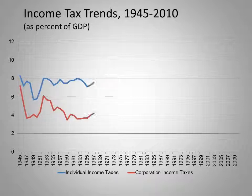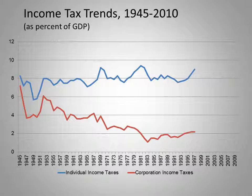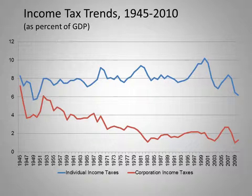Since 1945, individual income taxes — the blue line — as a share of the economy have hovered around 8% and are now near their historic low of just under 6%. And corporate income taxes, the red line, have fallen steadily from over 7% at the end of the war — near the same level as individual taxes — to barely 1% today.